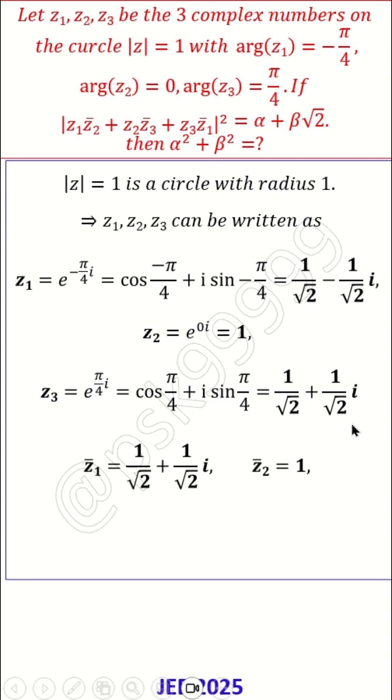Now you know the bar values - simple conjugate of each one of them. This is the conjugate values of z1, z2 and z3.